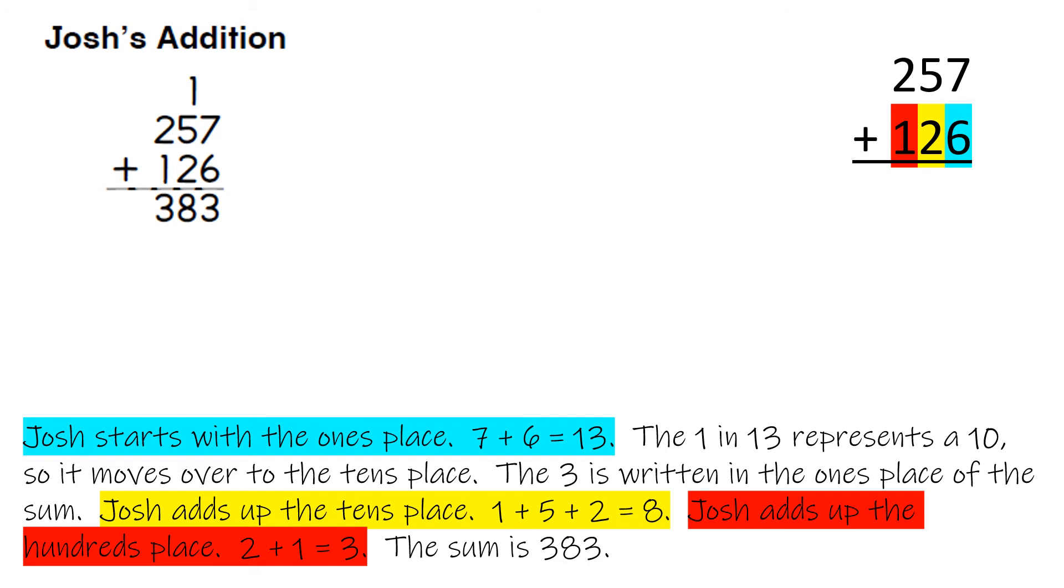Josh adds up the tens place, 1 plus 5 plus 2 equals 8. Josh adds up the hundreds place, 2 plus 1 equals 3. The sum is 383.